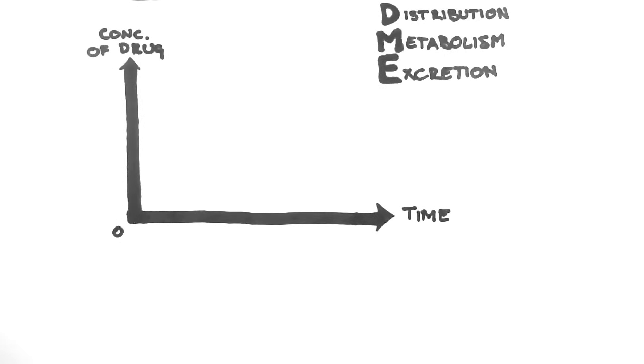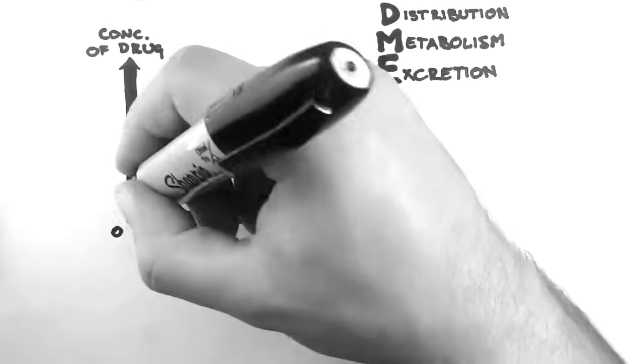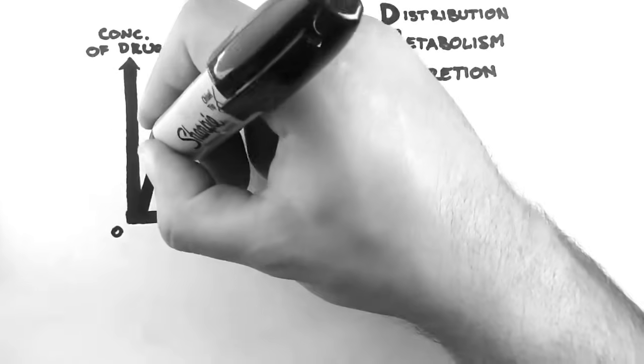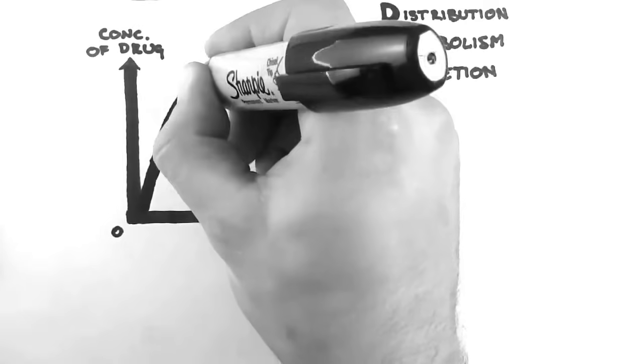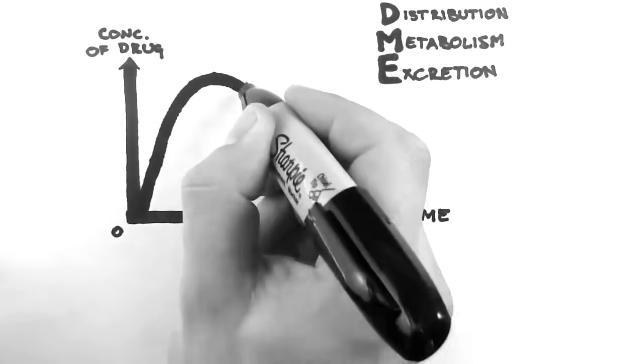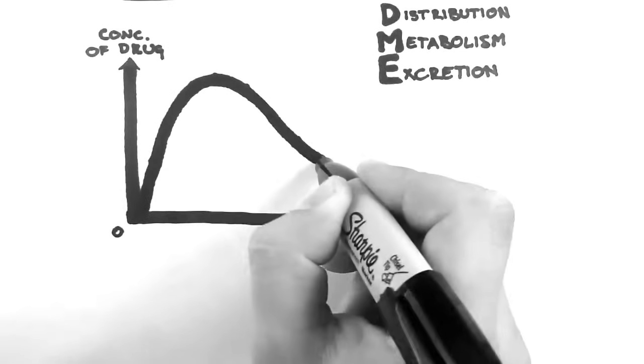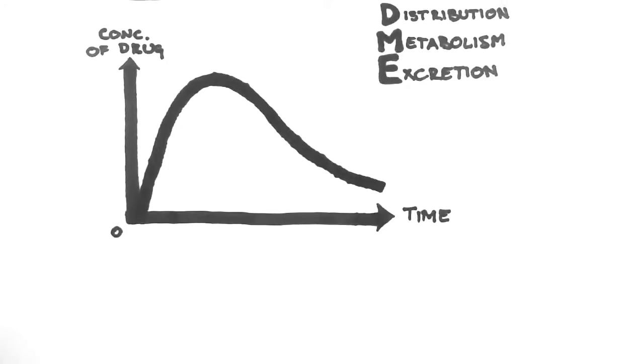So if we give a person a drug at time zero, then we will see the concentration of the drug go up, and then it will fall slowly as the drug is removed from the body. And that's what we see on this graph.